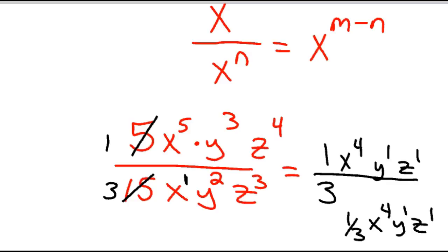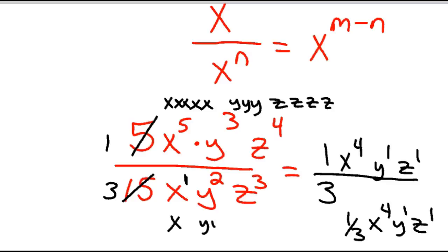You could have done that by expanding it out — you don't necessarily have to memorize the rule. There are 5 x's, 3 y's, 4 z's on top, and 1 x, 2 y's and 3 z's on the bottom. You could divide: z divided by z is 1, repeated three times, leaving z to the 1st power.